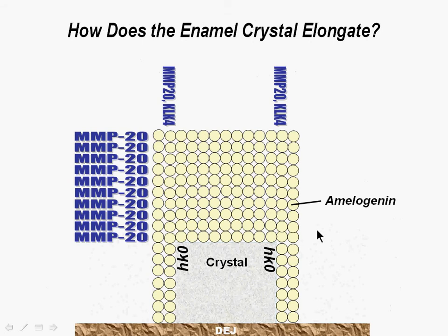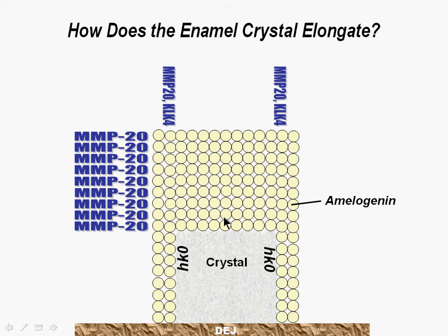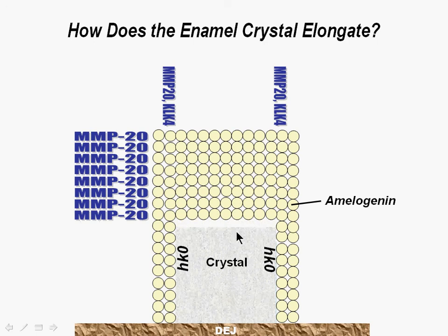Interactions between amelogenin and the crystal surface change the conformation of amelogenin and increase its susceptibility to proteolysis. MMP20 enamelisin will selectively degrade the protein bound on the crystal surface, release the inhibition of amelogenin, and create the space needed for crystal growth.